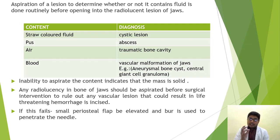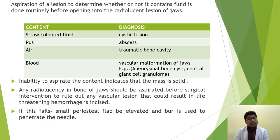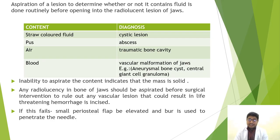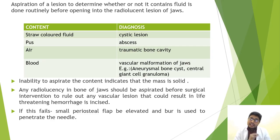The aspirated content also helps you arrive at a diagnosis. For example, if the cystic content has a straw-colored fluid, you can think of cystic lesions. If it contains pus, you can think of an abscess. If aspiration is negative with only air, you can think of traumatic bone cysts; if it contains blood, you can think of vascular malformations of the jaw. The inability to aspirate content indicates the mass is solid. Any radiolucency in the bone of the jaws should be aspirated before surgical intervention to rule out vascular lesions that could result in life-threatening hemorrhage.